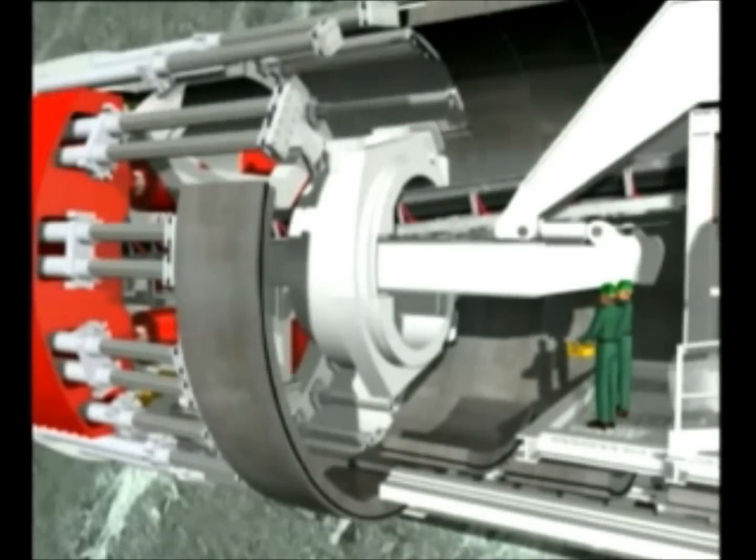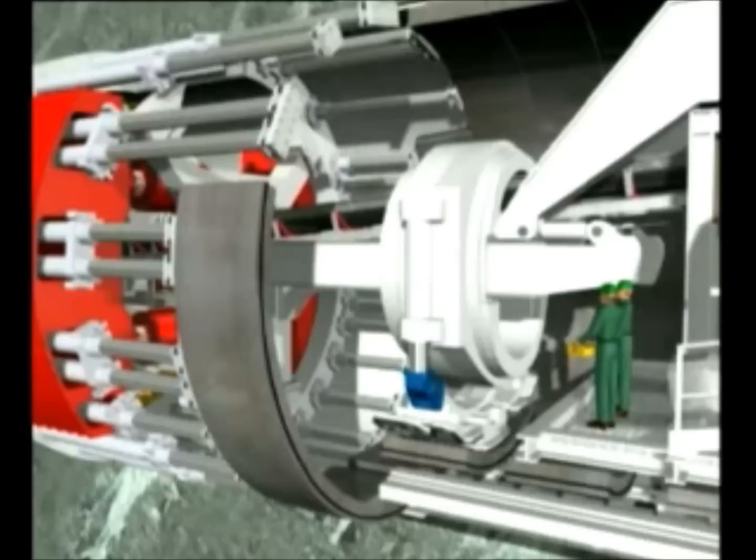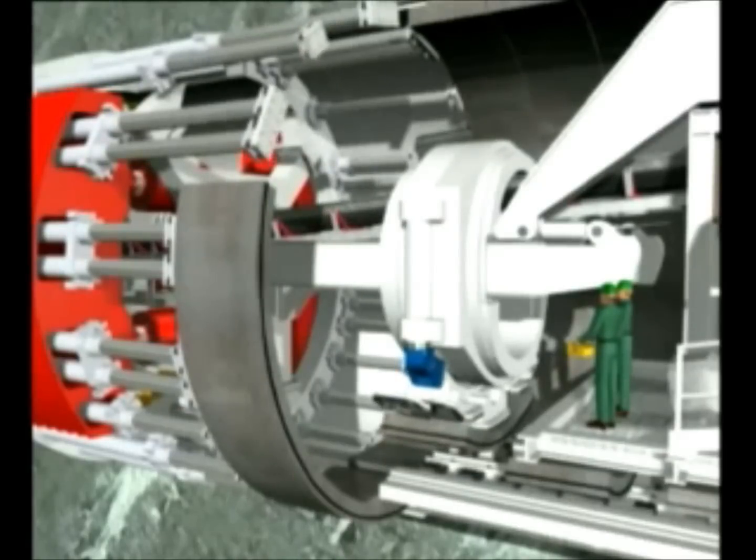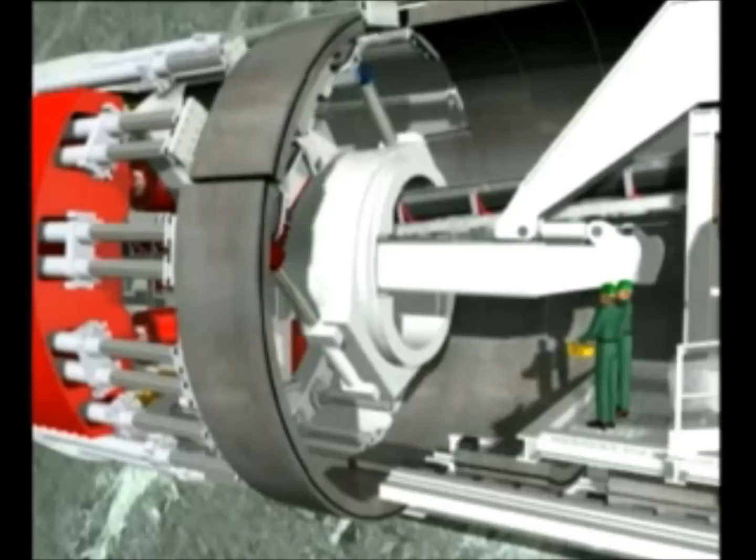At their exact intended location, the auxiliary cylinders are retracted prior to setting a new segment. The segment is set and braced immediately in place along with the overall system by the extension of the auxiliary thrust cylinder.